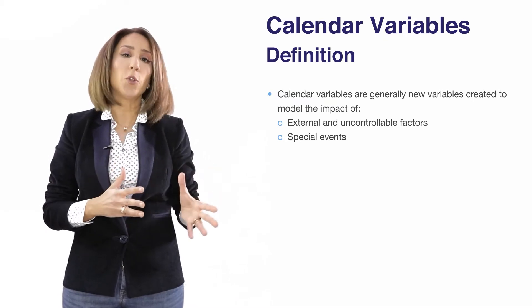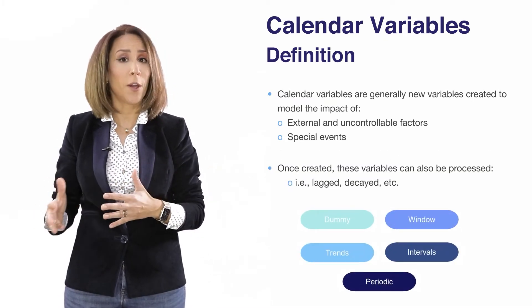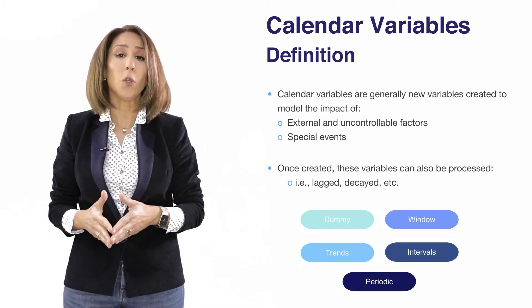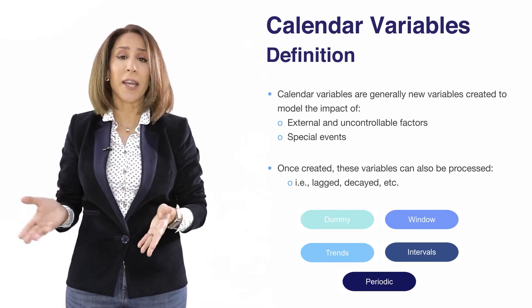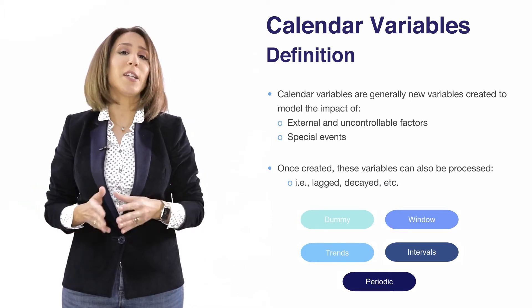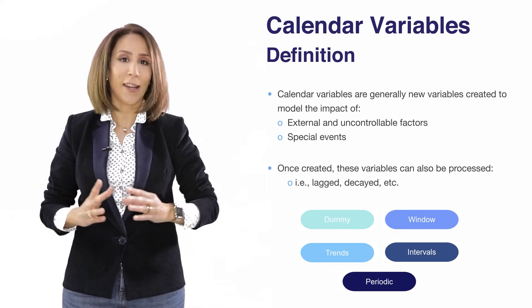Now once you create those variables, you can process them further or transform them. For example, you can apply a lag or a decay to a dummy or a trend that you have created initially as a calendar variable.